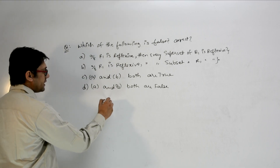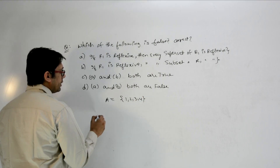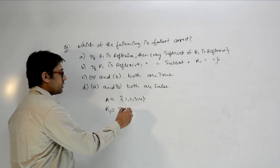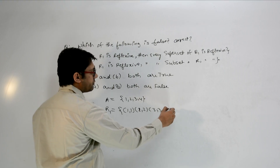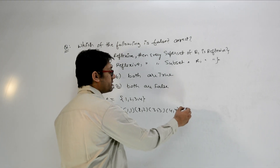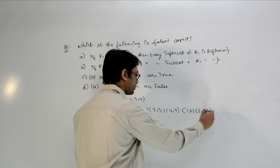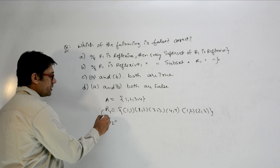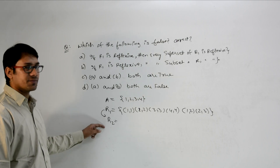Assume we have a set A = {1, 2, 3, 4}. Over this set A, there is a reflexive relation R1 containing (1,1), (2,2), (3,3), (4,4), (1,2), and (2,3). For a relation to be reflexive, these diagonal elements must always be present. This is indeed a reflexive relation.